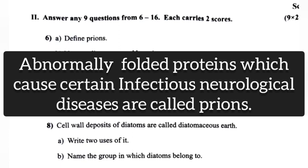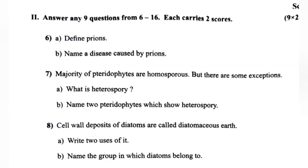Question 7: Name a disease caused by prions. Answer: Mad cow disease in cattle.